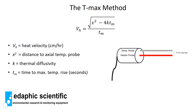The tmax equation is given here. Going back to high school physics, velocity equals distance divided by time, with some thermal properties included. In the equation, Vh is your velocity, x is the distance between the heater and the temperature probe (six millimeters or 0.6 centimeters in our case), tm is the time to maximum rise in temperature, and k is your thermal diffusivity. It's a fairly simple equation.